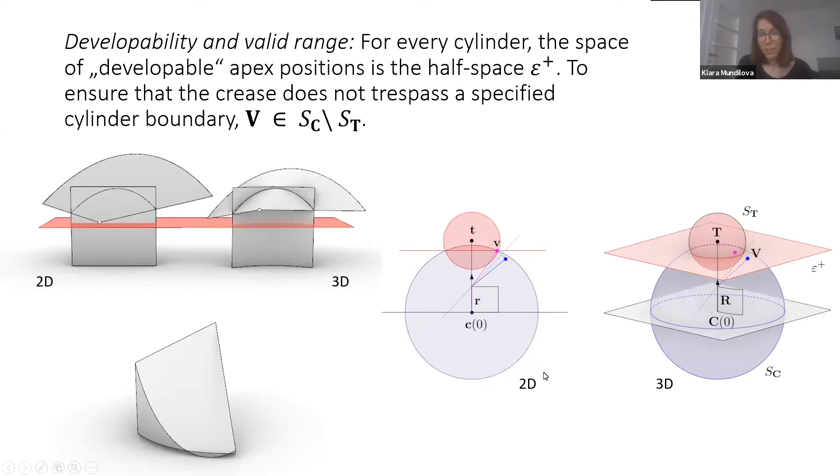First, developability and valid range. Suppose we have a cylindrical patch. This one is the 2D cylindrical patch, and this is the 3D cylindrical patch. We have a vertex V fixed in 2D. Now, we want to make sure to find a good 3D apex position so that we can always choose the right cylinder and the right cone, namely the cone that has the cone apex in it.